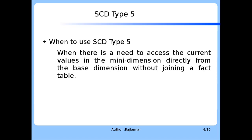When to use SED type 5: when there is a need to access the current values in the mini dimension directly from the base dimension table without a necessity to join a fact table — that is the use case when SED type 5 would be employed.